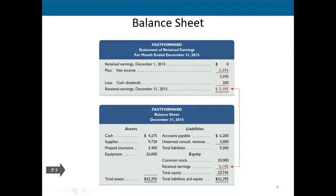Total owners' equity is computed and added to total liabilities. Liabilities plus owners' equity equals total liabilities and owners' equity, which in this example is $42,395. This confirms the accounting equation: assets must equal liabilities plus owners' equity. If the balance sheet is equal, you have successfully completed the preparation of financial statements.